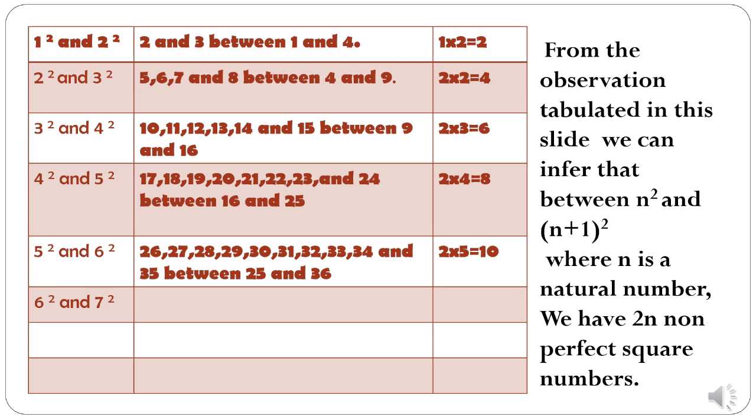Dear students, let us try to discover some more important facts. You can see that between 1 square and 2 square, we have 2 non-perfect square numbers. That is 2 and 3. In the same way, between 2 square and 3 square,